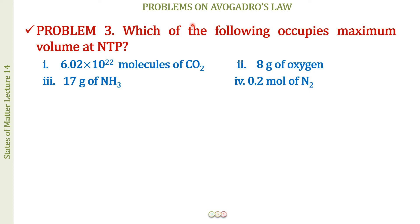The next question is: which of the following occupies maximum volume at NTP? The choices are 6.02 × 10²² molecules of CO₂, 8 g of oxygen, 17 g of ammonia, and 0.2 mole of N₂. At NTP, temperature and pressure are constant, so volume is directly proportional to the number of moles, per Avogadro's law.